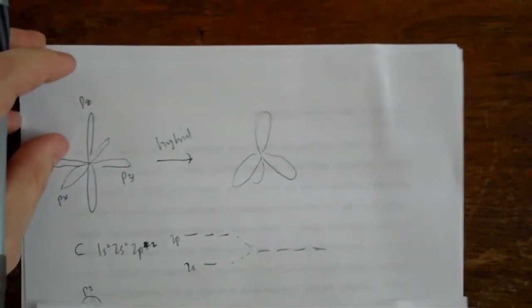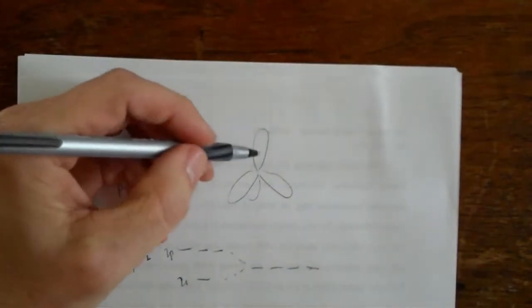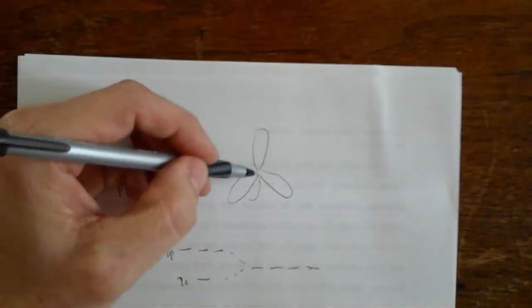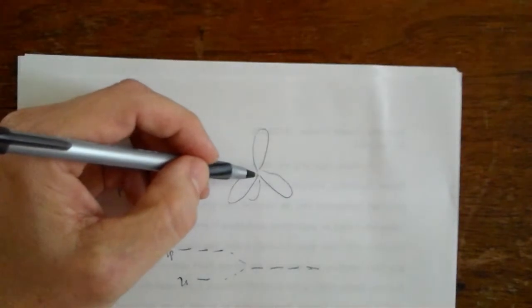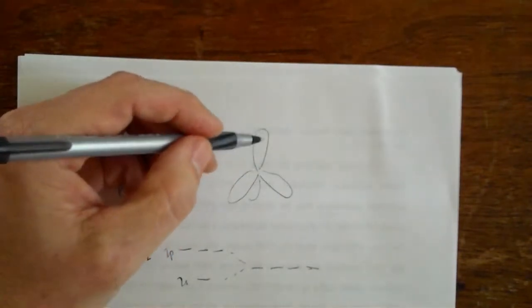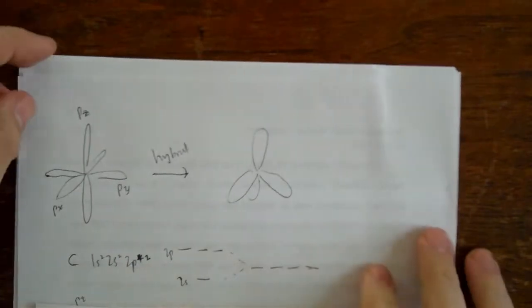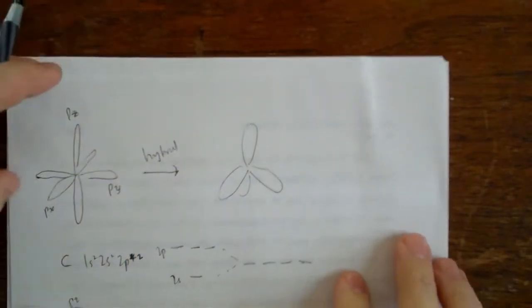By the way, I'm only drawing one lobe of this sp3 hybridized orbital. The other lobe is back here, and it turns out it's a smaller lobe, and the bonding usually goes here. So this is the carbon atom as it's hybridized.